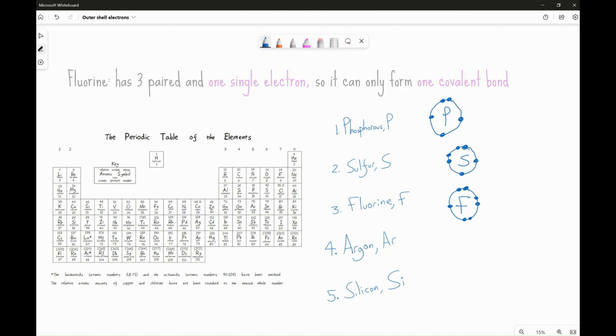Argon, as it's a noble gas, has a full outer shell electron. So, every single outer shell electron is paired up. So, it can't form any bonds. And finally, we have silicon over here with four unpaired electrons. So, it can form four covalent bonds.